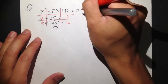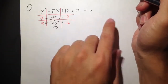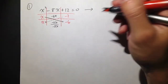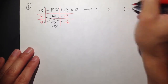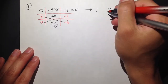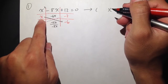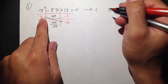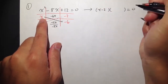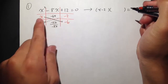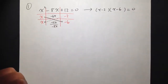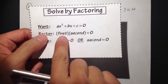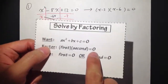So to factor this out into two factors, you get two parentheses equal to zero. For the first parenthesis, you read from left to right — we have x minus 2. And then for the second parenthesis, we have x minus 6. So the first parenthesis times the second parenthesis is equal to zero.